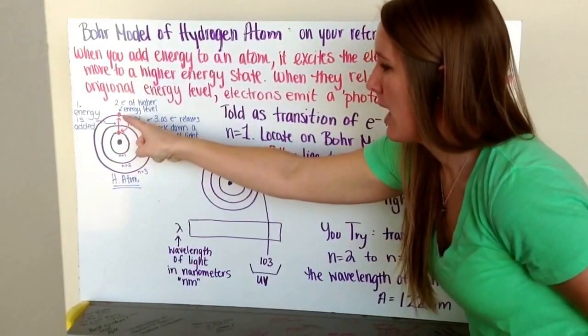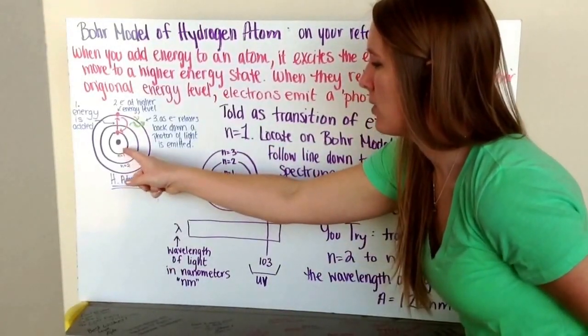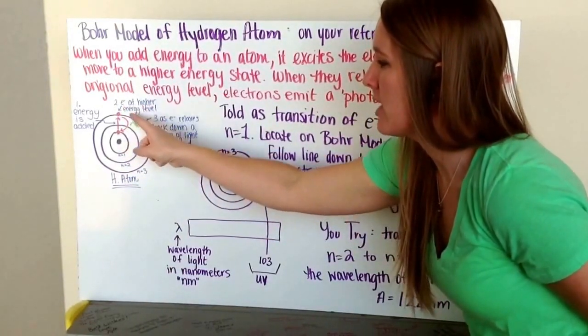so energy comes in and excites my electron, in this case, up to a higher energy level. In this case, energy level three, because it moves from n equals one to two to three. So my electron is at a higher energy level.